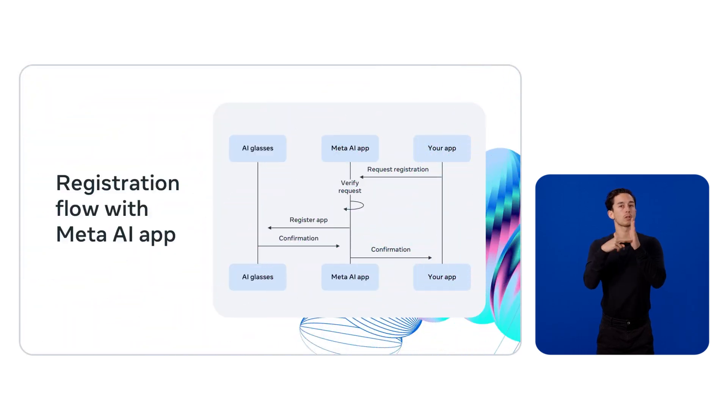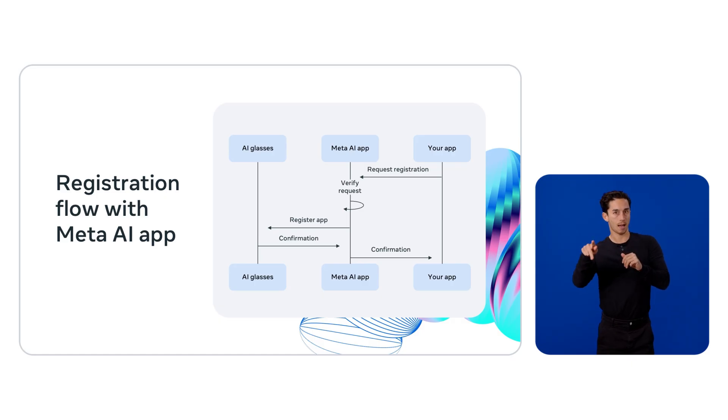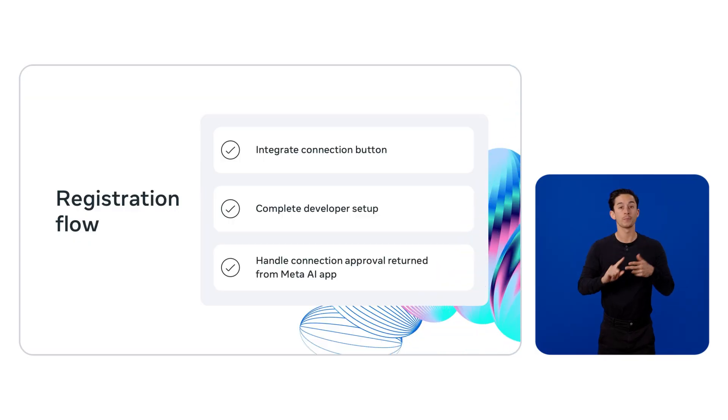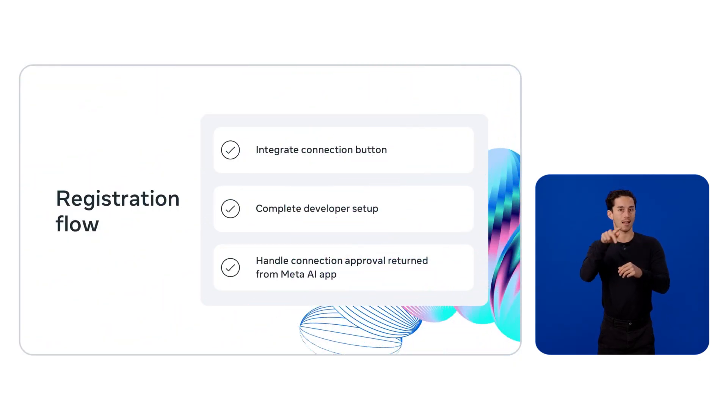The first step in integrating an application with our AI glasses is completing the registration flow. This initial registration flow is critical to allow secure authentication and connection between the sample app and the Meta app, which allows you to have an abstracted interaction between the sample app and the AI glasses. There are three different elements to have in mind. First, you'll need to include the Connect button from the SDK into your app — this button manages most of the secure registration process, including handling pairing your app with the device and requesting OS-level permissions such as Bluetooth if needed. Through it, the SDK allows pairing the app with the glasses with an information view in the Meta app. Second, you will have to complete a developer setup: update your app's configuration in the info.plist and the AndroidManifest.xml to ensure the SDK can request and manage the necessary access. Then, you should register your app in the Wearables Developer Center to generate an integration bundle needed to connect and request permissions from the device.